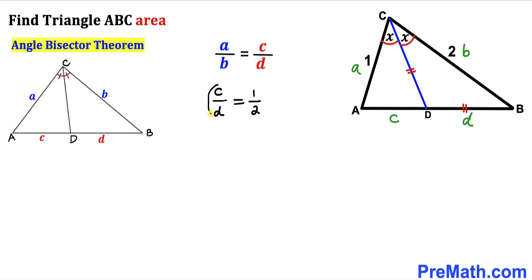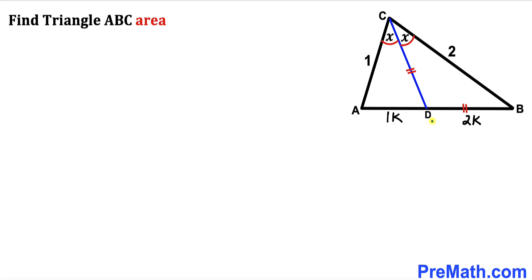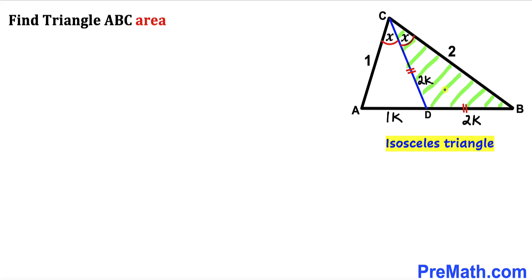Since this ratio equals 1 to 2, we can write c equals 1 times some constant k and d equals 2 times k. So segment AD turns out to be k and segment BD is 2k. Now we observe that BD equals CD — if BD is 2k, then CD is 2k as well, making triangle BCD an isosceles triangle.